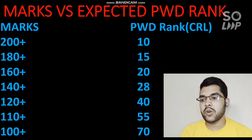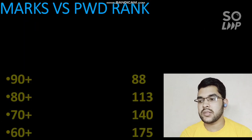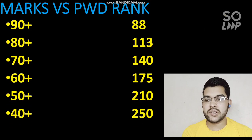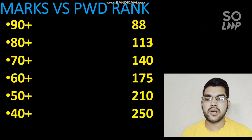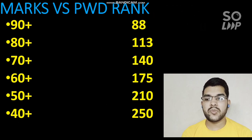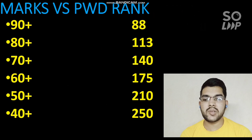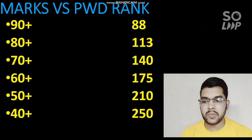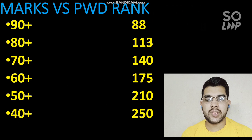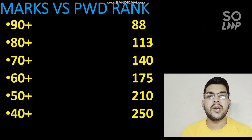For 90+ marks your rank will be under 88; for 80+ under 113; for 70+ under 140; for 60+ under 175; for 50+ under 210; and for 40+ your rank will be around 250. This is the CRL PWD rank — if you are from OBC PWD or SC/ST PWD your rank may differ on the same score.